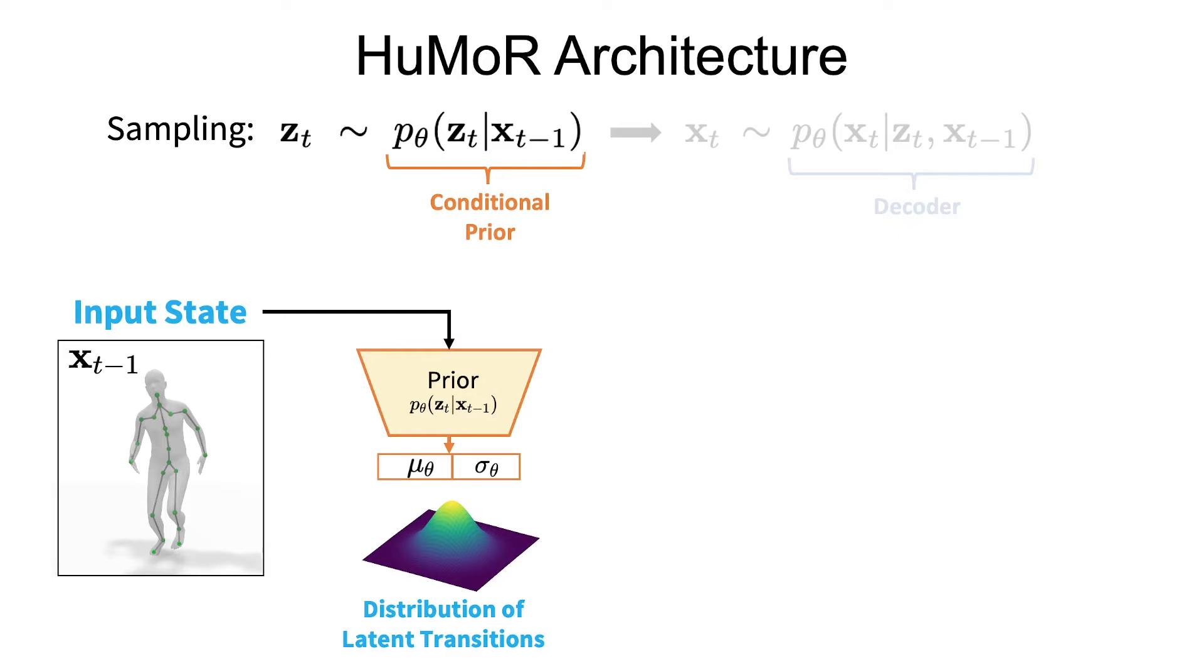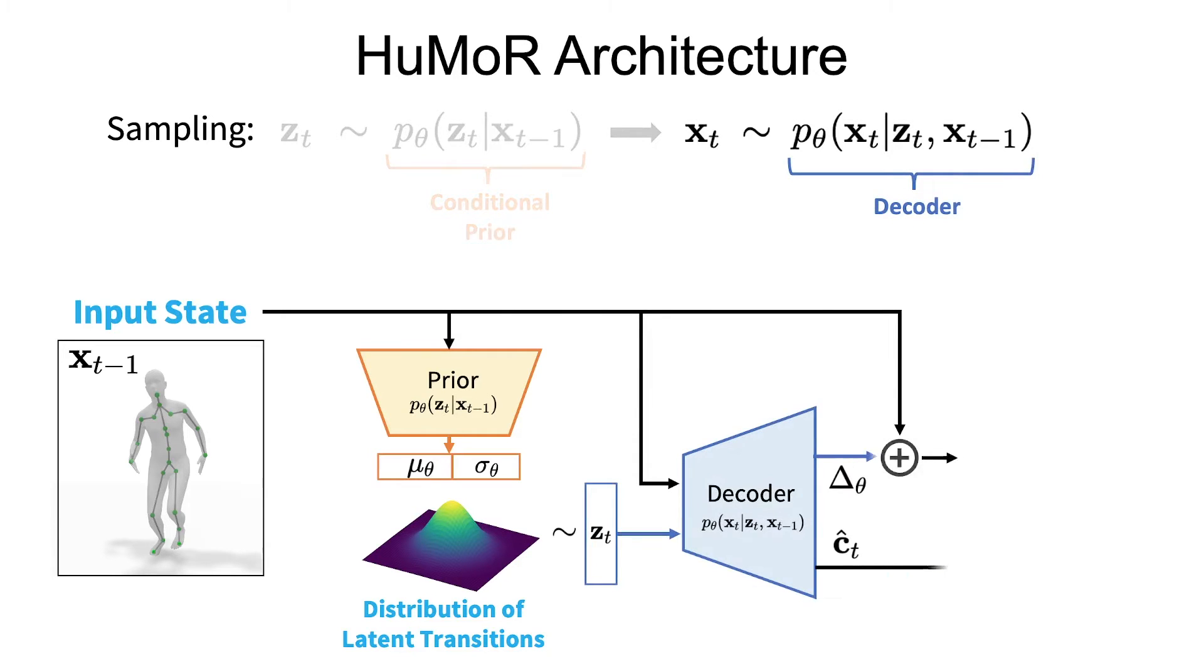The conditional prior encodes this state to a Gaussian distribution over latent variables. This can be thought of as capturing all possible transitions to the next pose. After sampling from this distribution, the decoder maps the latent transition to two outputs: first, the change in state, and second, a binary classification of ground contacts.